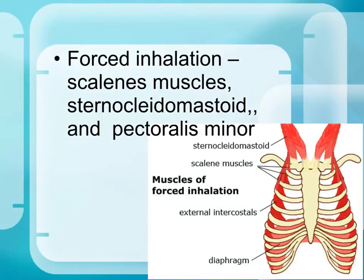In forced inspiration, additional muscles activate beyond the diaphragm and intercostal muscles. These include the scalene muscles on the front of the neck, the sternocleidomastoid muscles, and the pectoralis minor muscles — the small chest muscles. These are activated when you need to get more air into your lungs than during normal breathing.